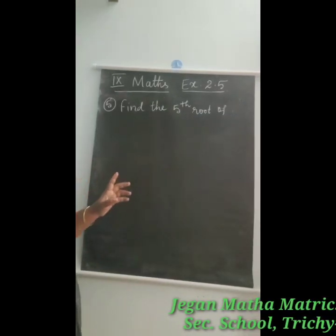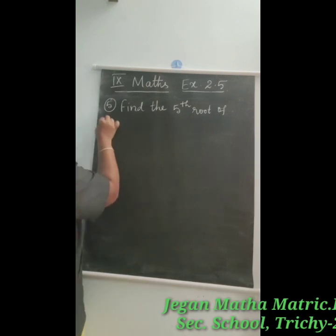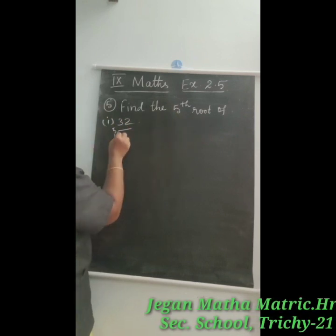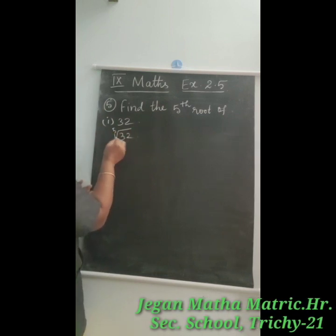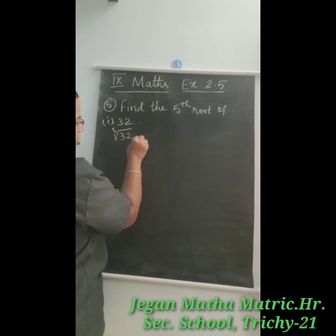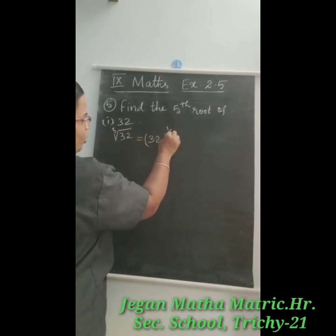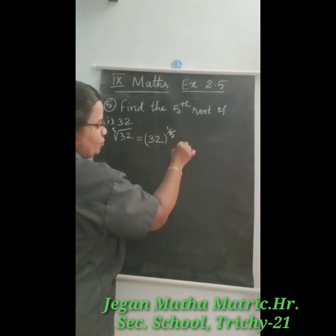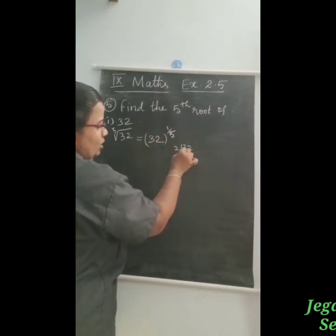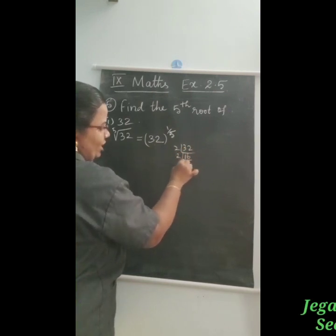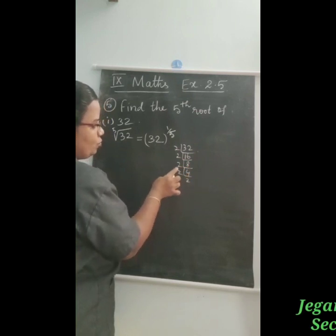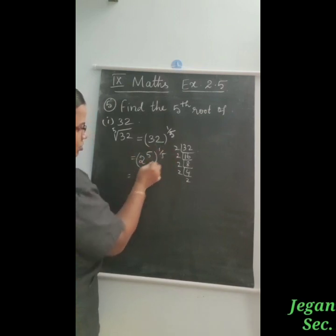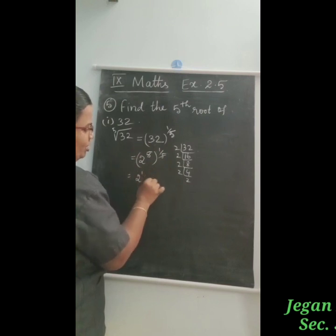The next question is: find the fifth root of 32. The fifth root of 32 means 32 the whole power 1 by 5. We factorize 32 by dividing by 2 repeatedly: 32 ÷ 2 = 16, ÷ 2 = 8, ÷ 2 = 4, ÷ 2 = 2, ÷ 2 = 1 — so 32 equals 2 power 5. Therefore 32 power 1 by 5 equals 2 power 5, the whole power 1 by 5, and the 5 and 5 cancel, giving 2 power 1, which is equal to 2.